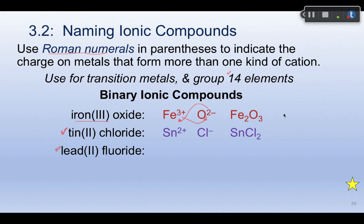Lead 2 fluoride: lead is Pb from a Latin root, and lead 2 means Pb plus 2. Fluoride, like every other halogen in group 7A, has a minus 1 charge. So Pb plus 2 must combine with two fluoride ions — PbF2 for lead 2 fluoride.